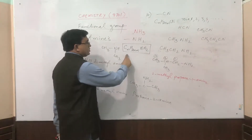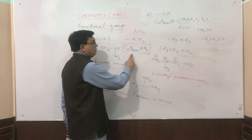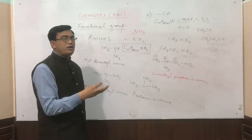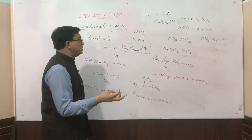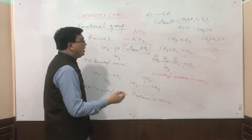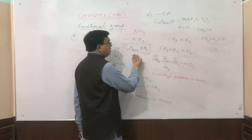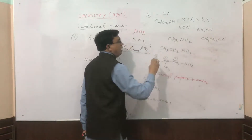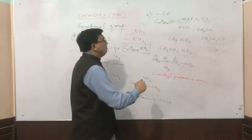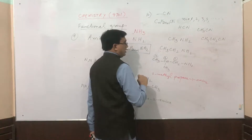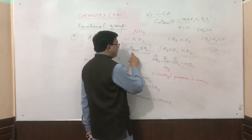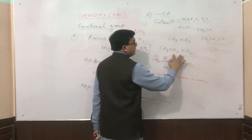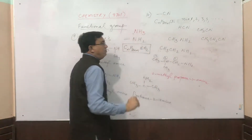If we use this formula and put the values from 1, 2, 3, 4 — when we put N equal to 1, we get methylamine. If we put N equal to 2, we will get ethylamine.